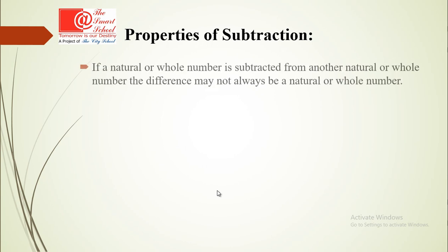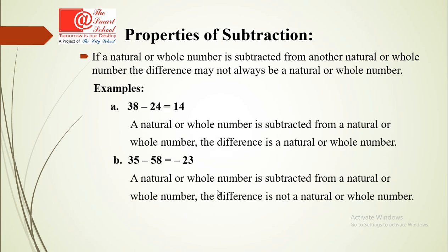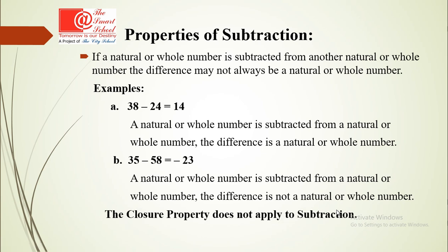Now, properties of subtraction. If a natural or whole number is subtracted from another, the difference may not always be a natural or whole number. For example, 38 minus 24 equals 14, which is a natural number. But 35 minus 58 equals minus 23, which is not a natural or whole number — it is an integer. So the closure property does not apply to subtraction.